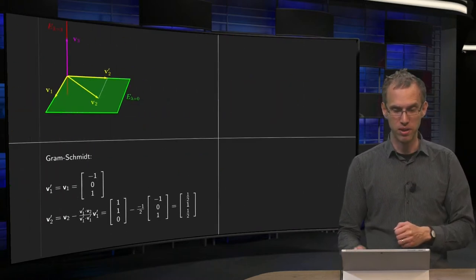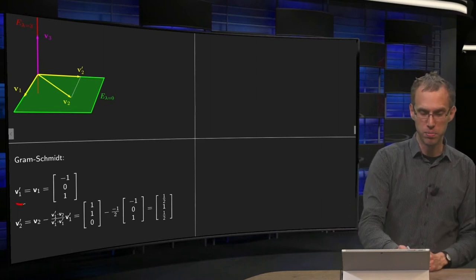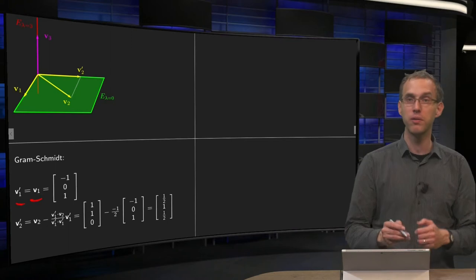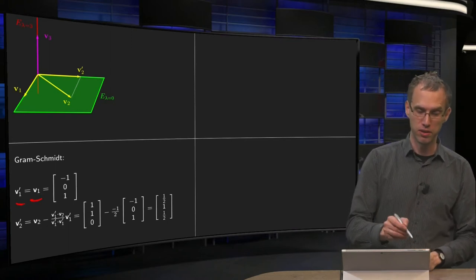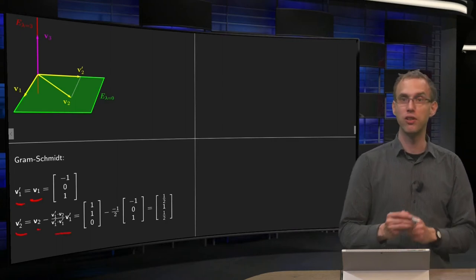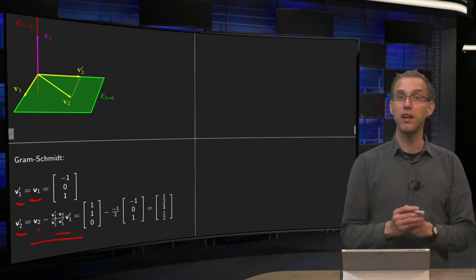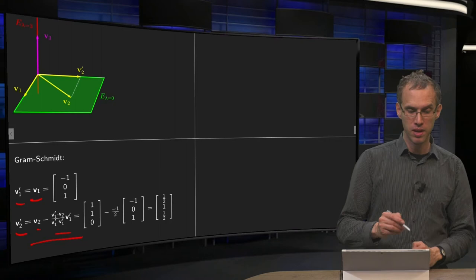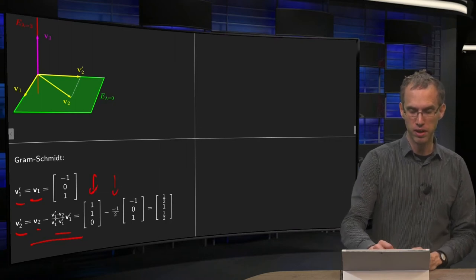So, there we go, Gram-Schmidt. So as our first new eigenvector we just pick v1 prime equals v1, and as our second eigenvector v2 prime we take v2 minus its projection on v1 prime. So there we go, you see the familiar projection formula. So we have our v2, compute the coefficients, minus one-half.